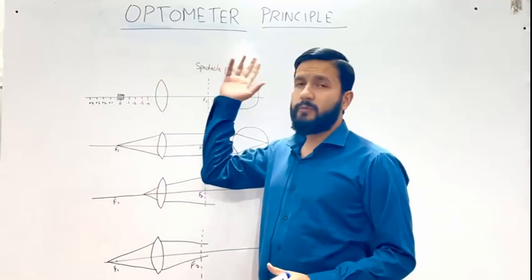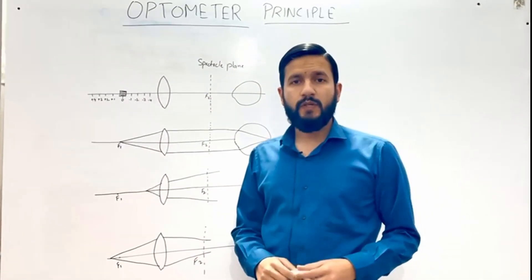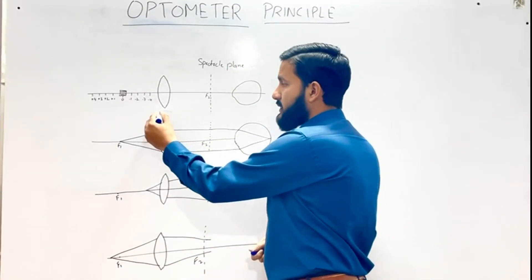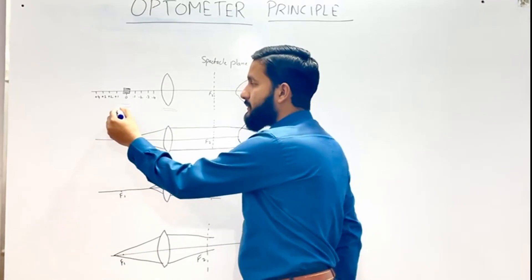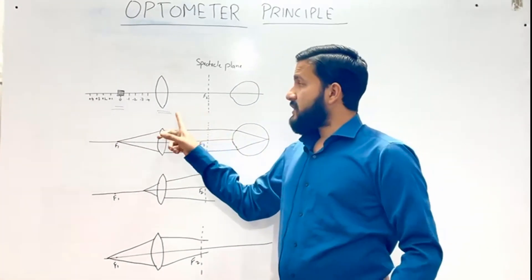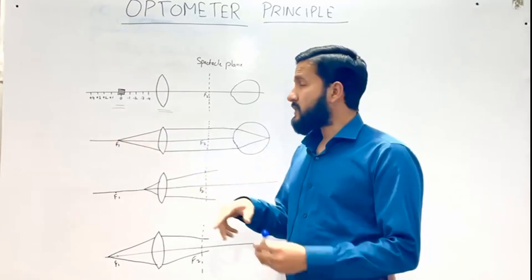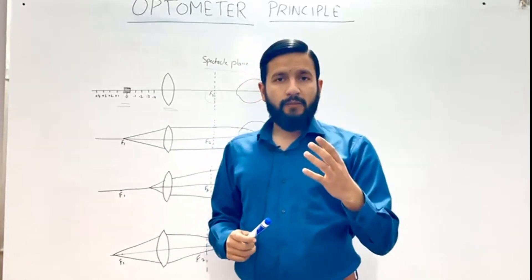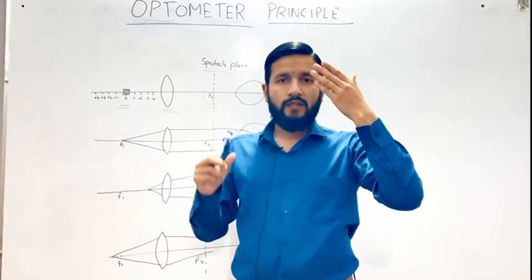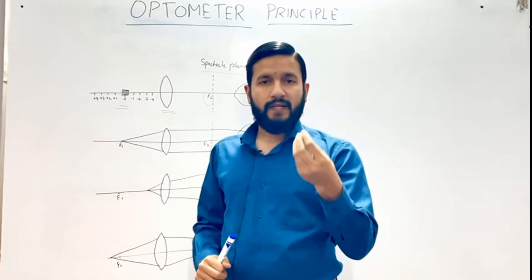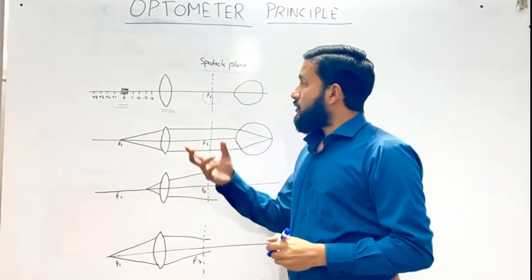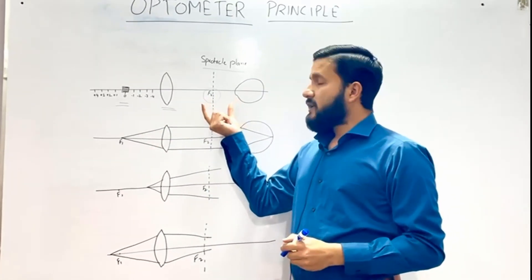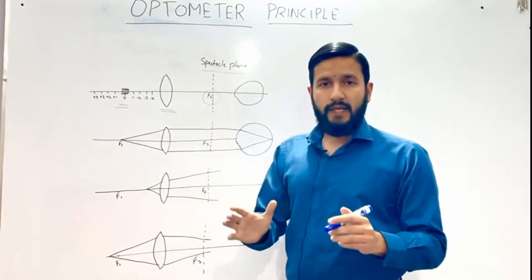Today we will discuss the Optometer Principle, which is used in auto-refraction. According to this principle, you need a convex lens and a movable target. The convex lens is placed such that its second principal focus F2 lies in the spectacle plane — the position where glasses sit in front of the eye.